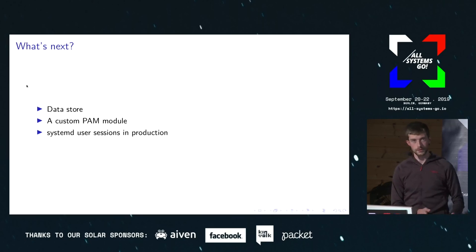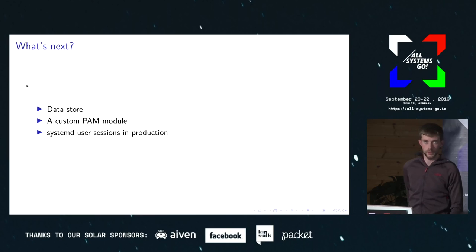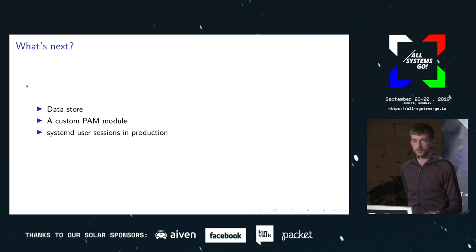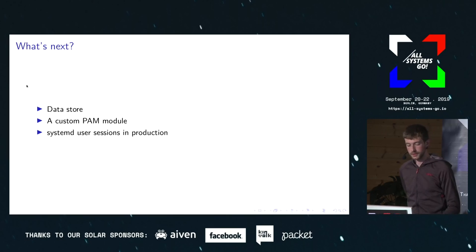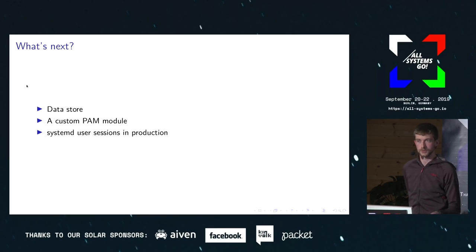With that done, what is next? We need to store how much time you spent in your session and how much time you spent using different apps over the last week or day or whatever period you want to calculate and enforce over. We need to implement that custom PAM module that will set the limits and enforce that on login and at session end. And we need to move to using systemd user sessions in production, because that gives us scopes for apps and more control over applying these limits to individual parts of your system.